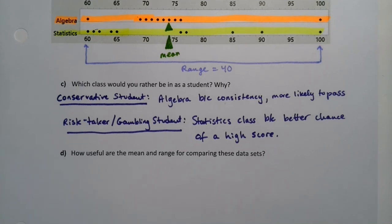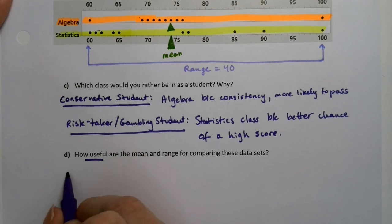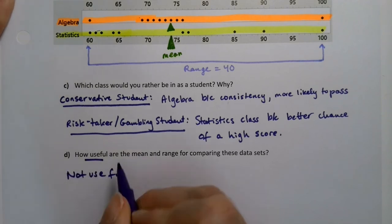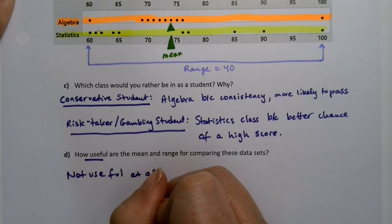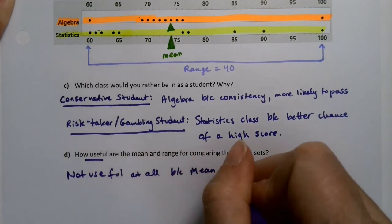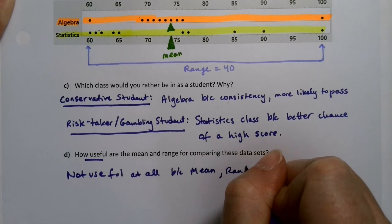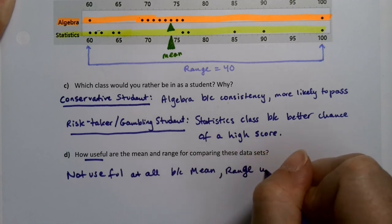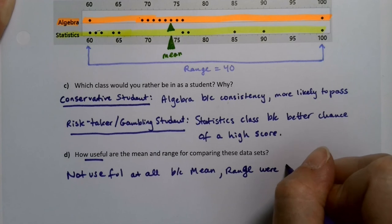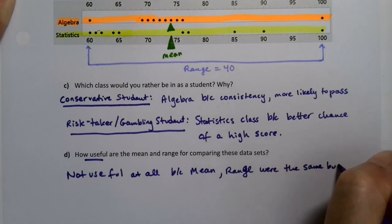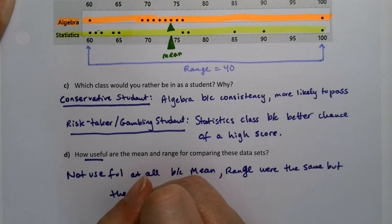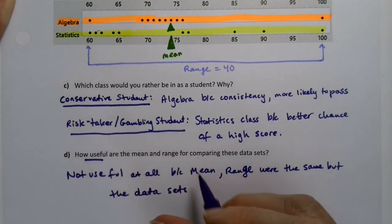So what does this show us this particular example? What was I shooting for here? The mean and the range were the same. So how useful are they for comparing these data sets? They're not useful at all. Not useful at all, because they were the same. The mean and the range were the same, but the data sets are not the same.